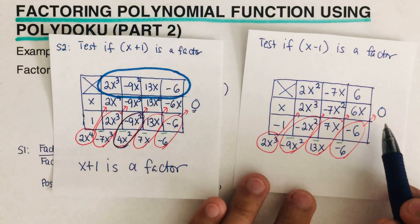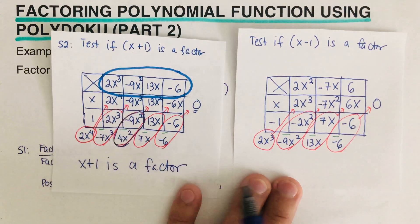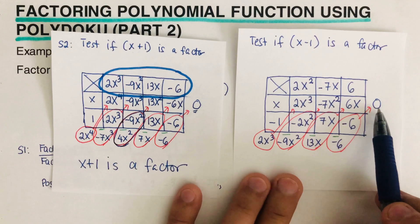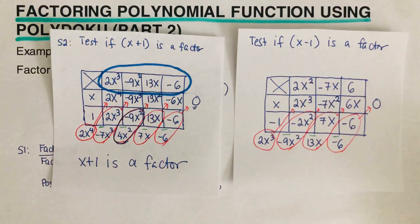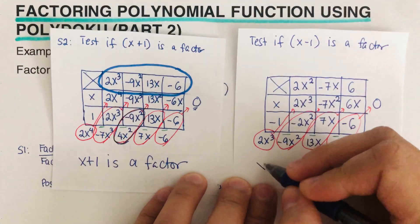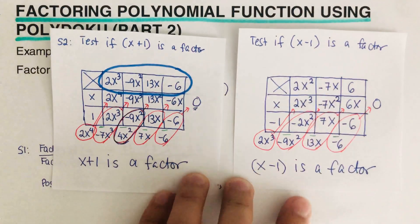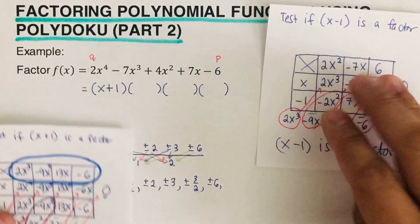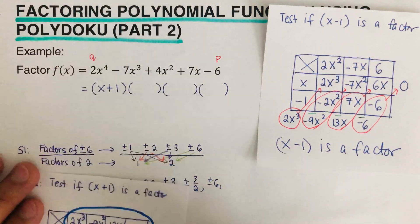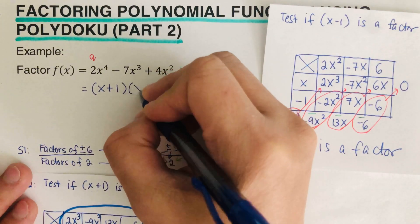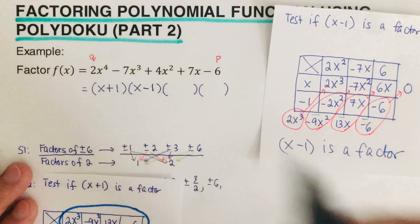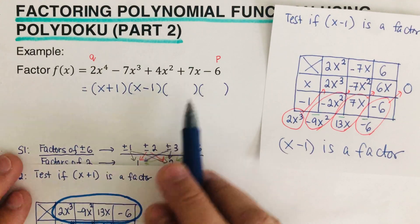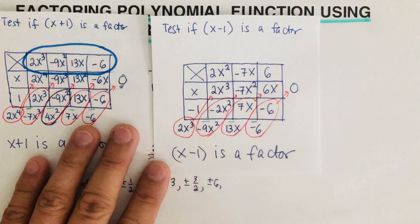Since the remainder came out to zero when I divided, this means that x minus one is also a factor. So I can write x plus one — that's done and it's a factor — and x minus one is also a factor. I still need to figure out what the remaining two parentheses are. This will be part of step three. Step three is when you get down to the second degree. What we did at the beginning was reduce from the fourth power down to the third, and since x minus one was a factor, we reduce it down to the second power.